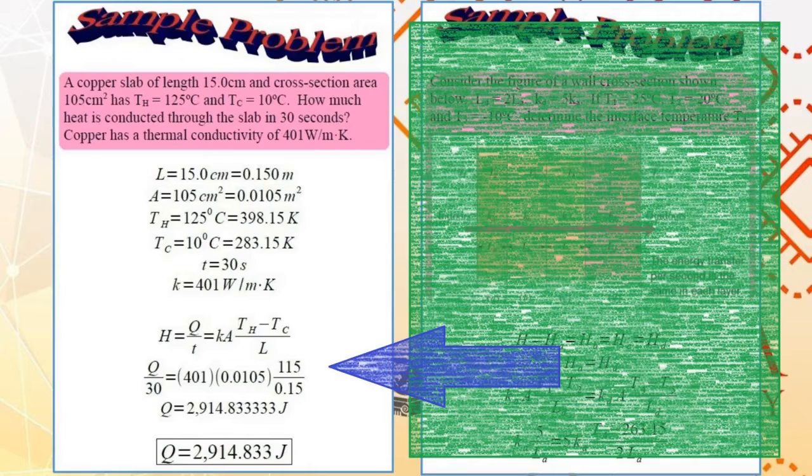So, heat will flow from hot to cold. And since this is a solid object, a copper slab, you have thermal conduction. H is equal to Ka TH minus TC over L. The rate at which the heat flows from TH to TC. And the general equation for H is total heat transferred Q divided by elapsed time T. So, you have Q over T is equal to Ka TH minus TC over L. Plotting in the values, you see that the only unknown quantity is capital Q, the total heat transferred. And you are able to calculate Q to be 2,914.833 joules.